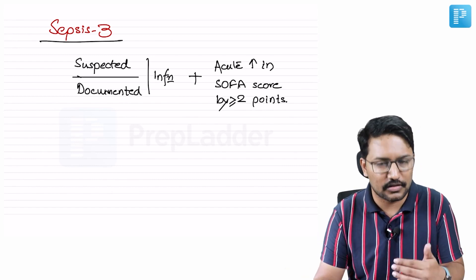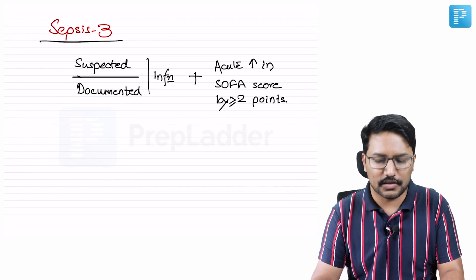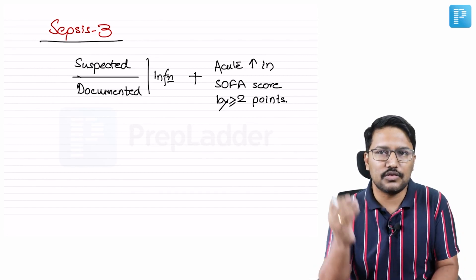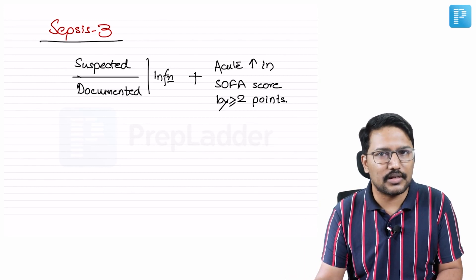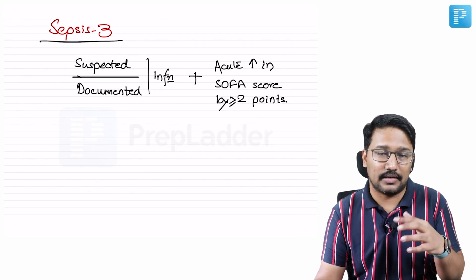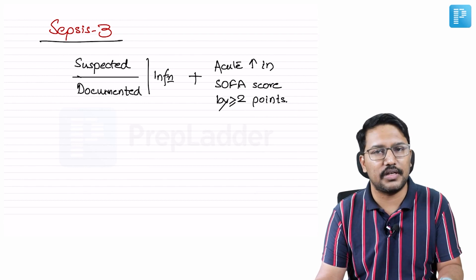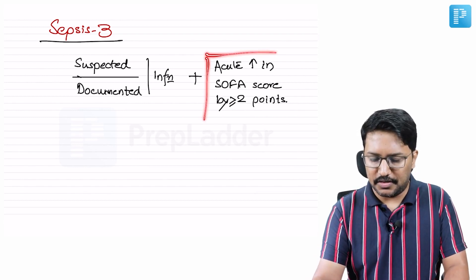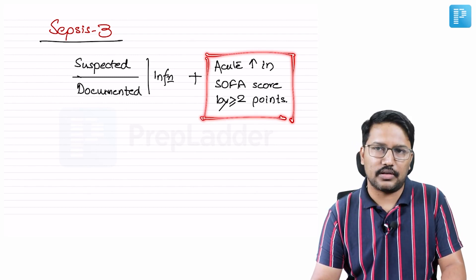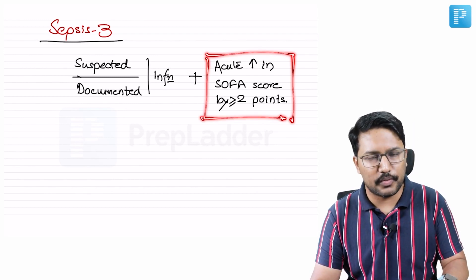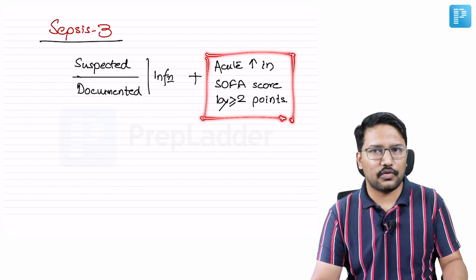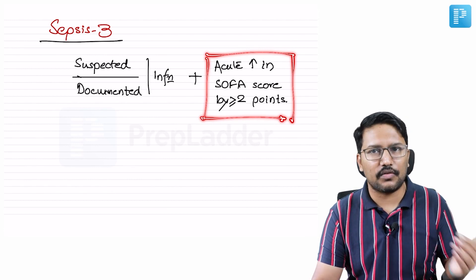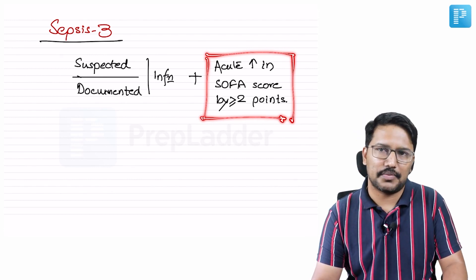Their SOFA score will be one or more. If you blindly apply the rule of suspected or documented infection plus two SOFA points, you risk over-diagnosing sepsis in those patients. Recognizing sepsis precisely in those patients is very important because those are the risk groups. That is why the ideal definition is acute rise in SOFA score by more than or equal to two points. If a patient has a baseline SOFA of four or five and it rises by two to six or seven, that is a case of sepsis.